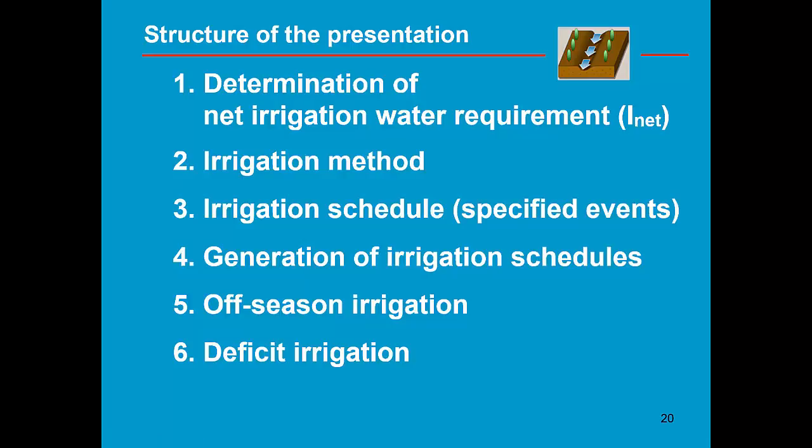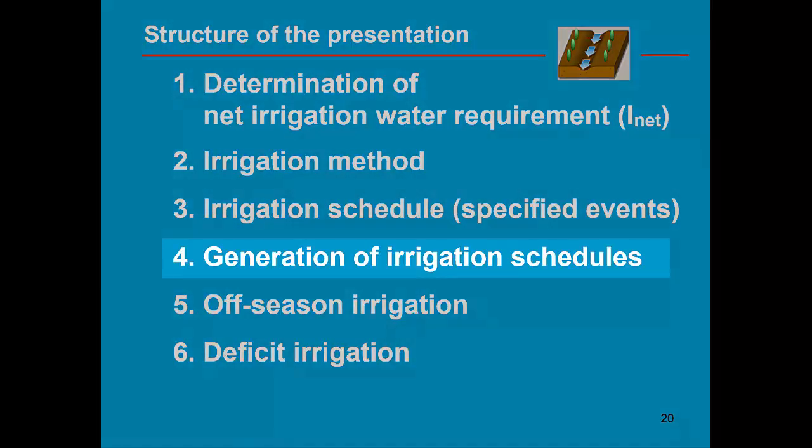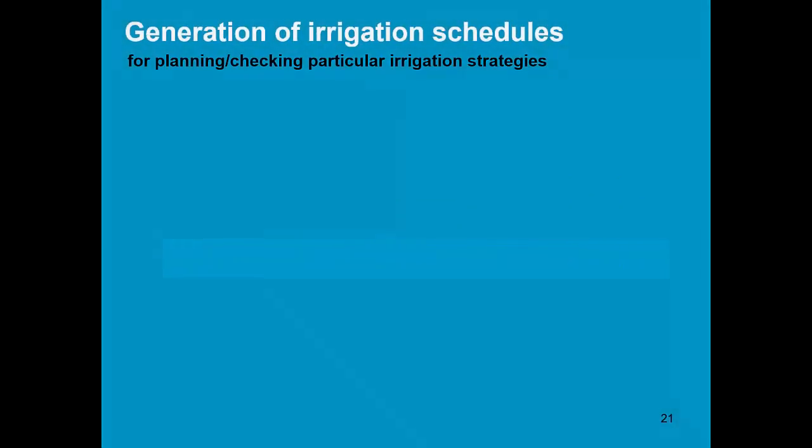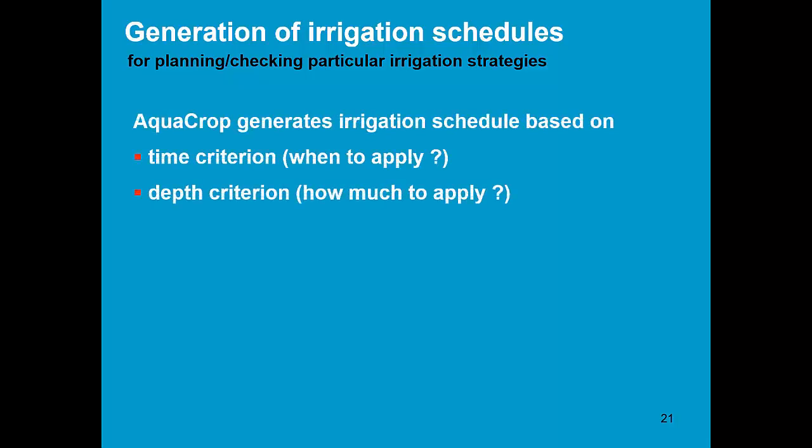In this part of the training module we will discuss the generation of irrigation schedules and deficit irrigation. The mode generation of irrigation schedules is used to design irrigation schedules, to check particular irrigation strategies. It consists in selecting a time criteria and a depth criterion.